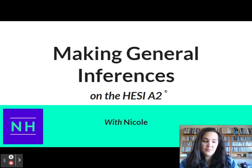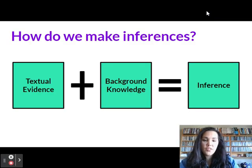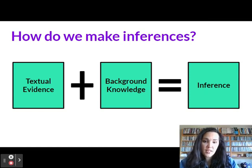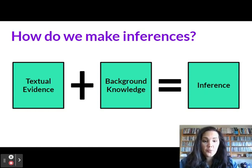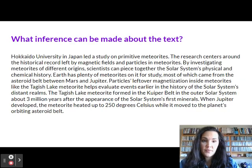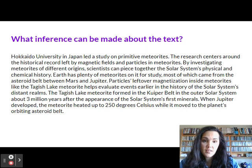Let's dive in. Just as a quick reminder, how we make inferences is we pull textual evidence coupled with our background knowledge to be able to make an inference. Here is a typical question that you could see about making a general inference about a text — not about something specific, but about the text as a whole.